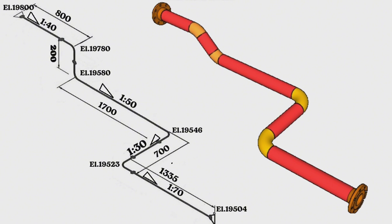In this piping isometric drawing, slopes are shown with these symbols and different elevations. Elevations are shown in six places in this pipe isometry, and we will be able to calculate the fall in the pipeline with these elevations.